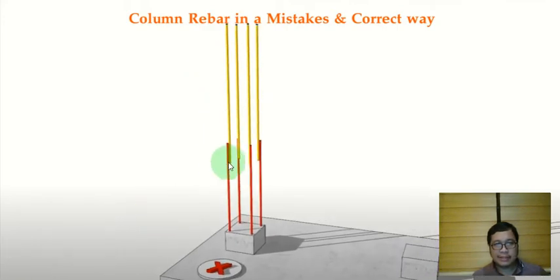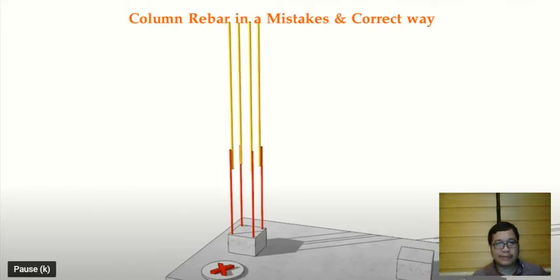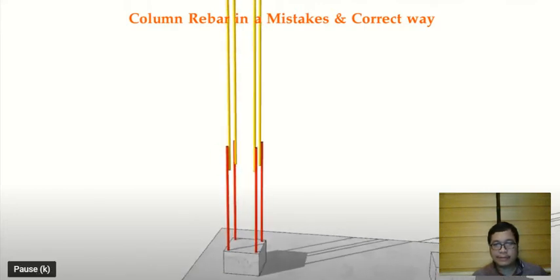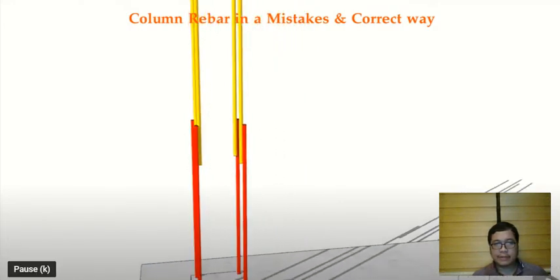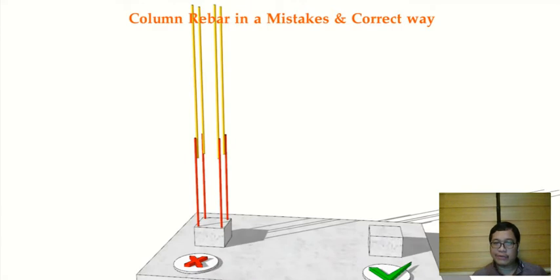Notice it's just connected like this. So when you pour concrete, there's a possibility that this bar highlighted in yellow will slip down. Like what I've said before, look at this one. That's the wrong way to do your rebars.